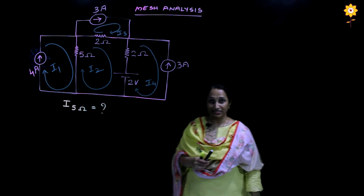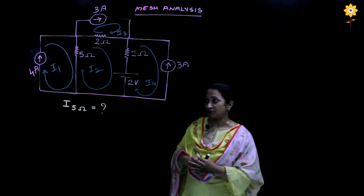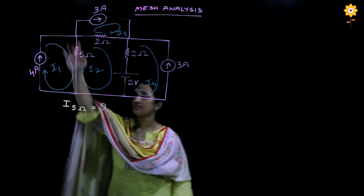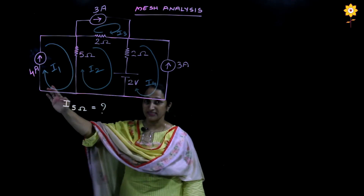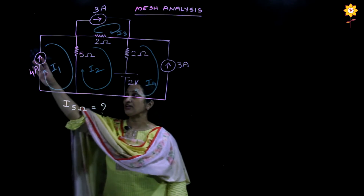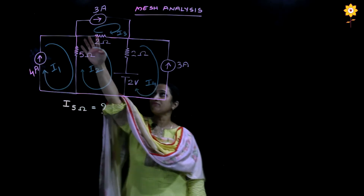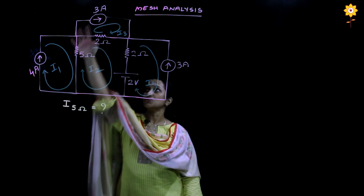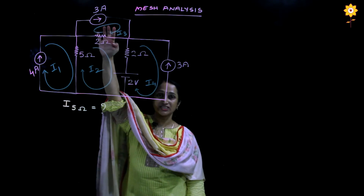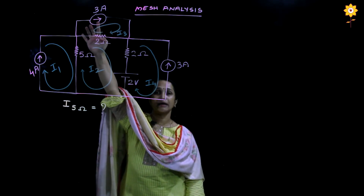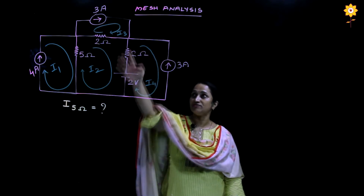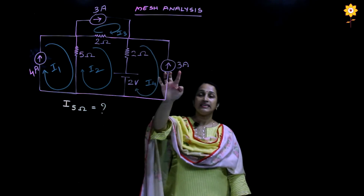Once you have marked the mesh currents, let us see the next step. If a current source is present in the outermost path of a particular mesh, you can directly assign the value of that mesh current equal to the value of the current source. This applies to the mesh with i1, the mesh with i3 which can be assigned 3 amperes, and similarly i4.